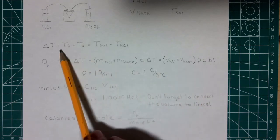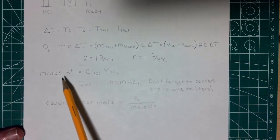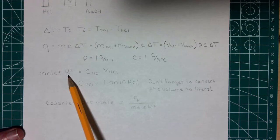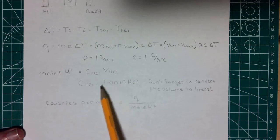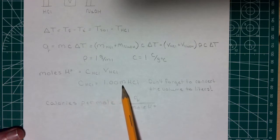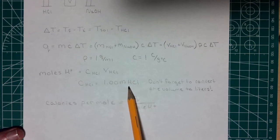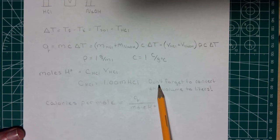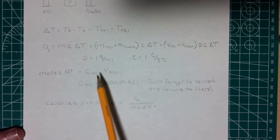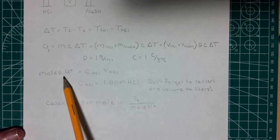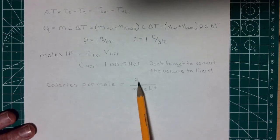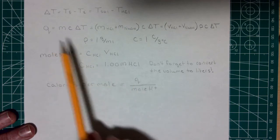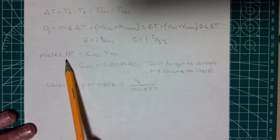Then we multiply by the delta T we calculated. After that, we need to figure out the moles of acid neutralized in this process: it's the concentration of the acid times the volume of the acid. The concentration of HCl is 1.00 molar, as given in the experimental PDF. Don't forget to convert the volume to liters so that multiplying by molarity gives you moles. Finally, calories per mole is just the Q value divided by the moles calculated.